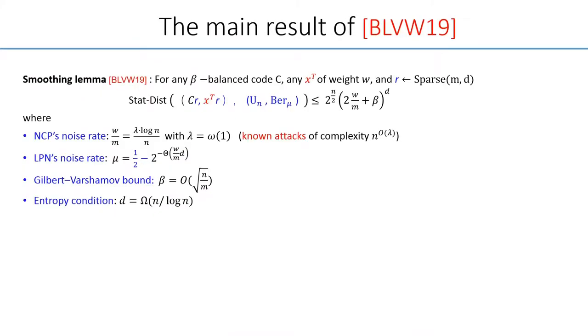Now we can take a closer look at the BLVW result quantitatively. First, we look at their smoothing lemma for balanced code. There is some lower bound on the NCP noise rate due to the known attacks. There is also the Gilbert-Varshamov type bound on beta to guarantee that the balanced code actually exists.